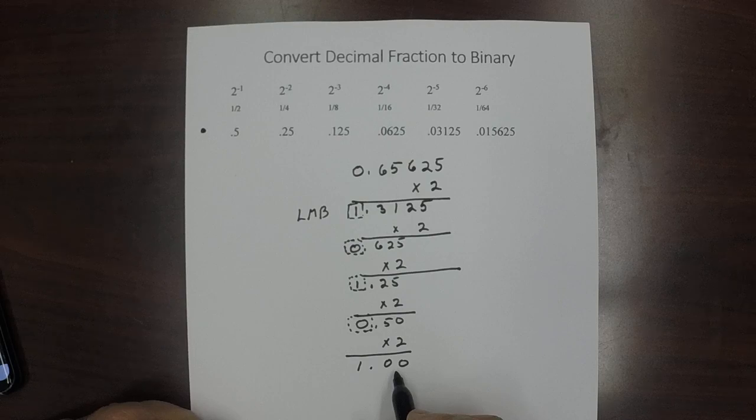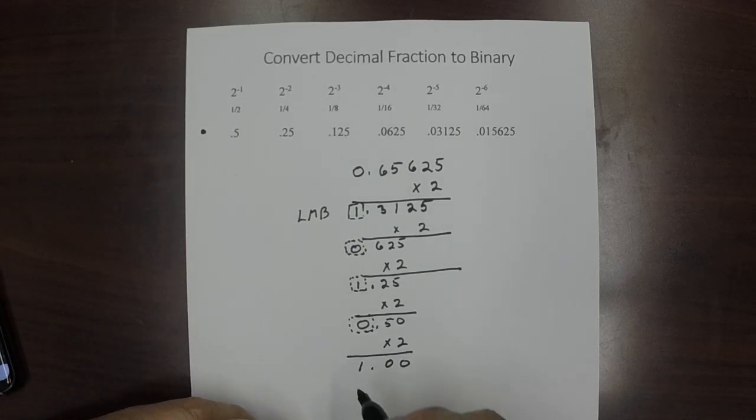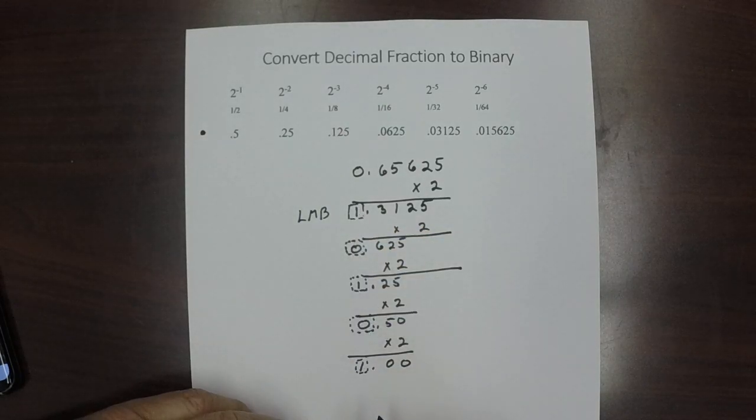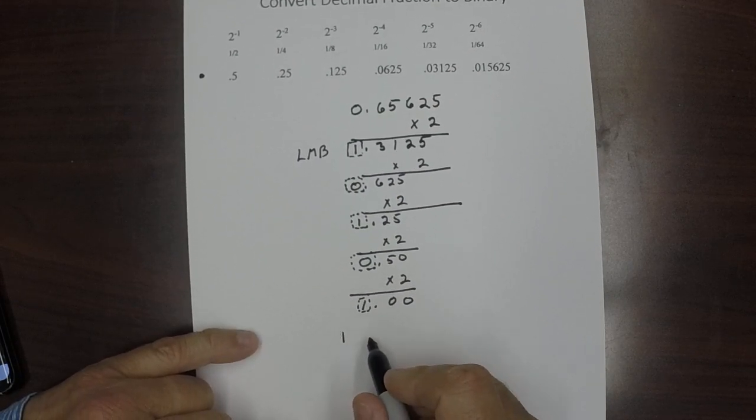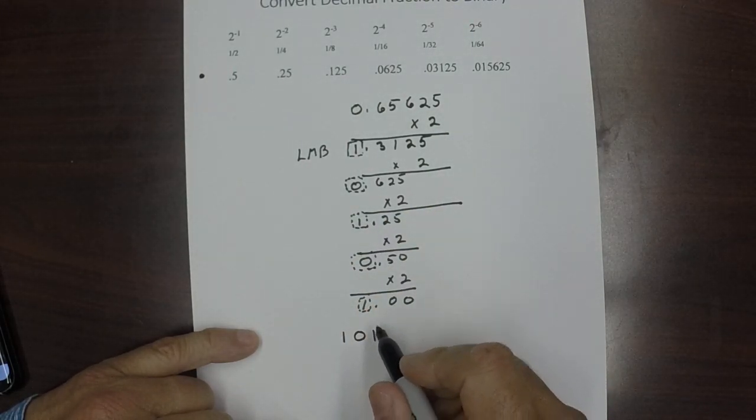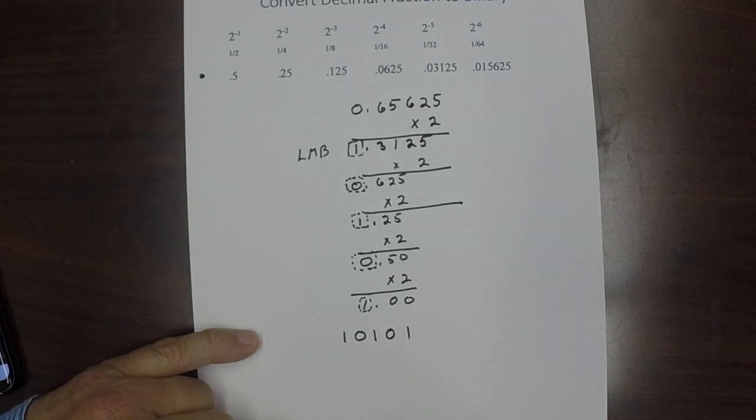We stop whenever everything to the right of the decimal place is all 0's or we've reached the limit of our precision. In other words the maximum number of bits that we can actually store. So this becomes our number. We're just going to translate it down here. We're going to say it's now 1, 0, 1, 0, 1. And that is our number in binary.